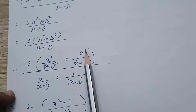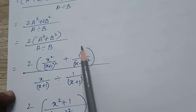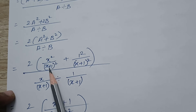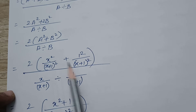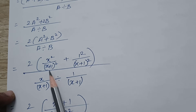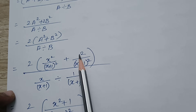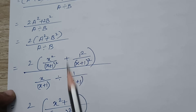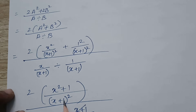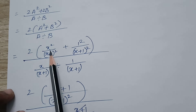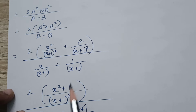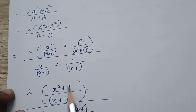This is a rational expression — addition of rational expressions. The denominators are the same: X plus 1 the whole square, and X plus 1 the whole square. So add the numerators. The numerator becomes X square plus 1, all over X plus 1 the whole square. Then multiply by 2.